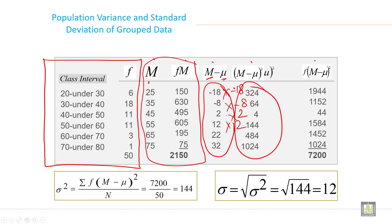After this just multiply M minus μ whole square into frequency. So your frequency is 6, so just here multiply 6 and write here. Multiply from 18 and write here. Multiply from 11 and write here. Multiply from 11 and write here. Multiply from 3 and write here. Multiply from 1 and write here. And at the end add all this.